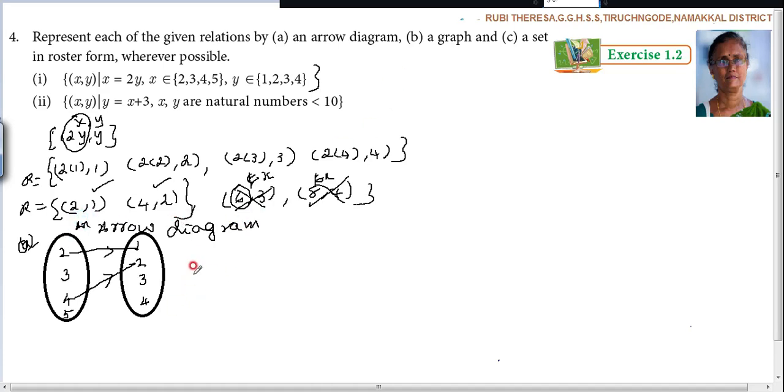Next one is graph. This is x, y, 0. Here it starts with 2. Many students are making mistake. But you have to start with 1, because equal intervals. This is 2, 3, 4, 5. Here 1, 2, 3, 4. What are the pairs you have to plot? 2, 1. From x axis 2, y axis 1. Next, 4, 2. From x axis 4, y axis 2. So B is finished.